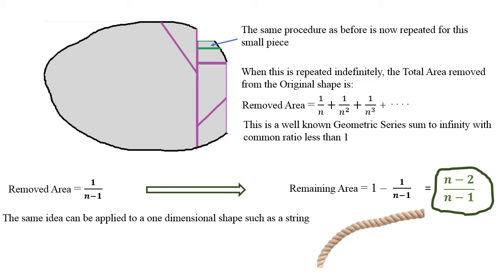So if I have a shape and divide it into 2 equal pieces, n equals 2, then at the end if I substitute 2 minus 2, nothing is left. If n equals 3, 3 minus 2 is 1, and 3 minus 1 is 2, then half of the area is left.